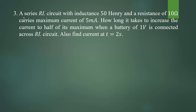Let us take the next problem. A series RL circuit with inductance 50 Henry and a resistance of 10 ohm carries a maximum current of 5 milliampere. How long does it take to increase the current to half of its maximum when a battery of 1 volt is connected to the RL circuit? Also find the current at t equal to 2 seconds.